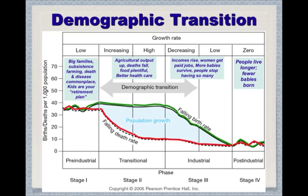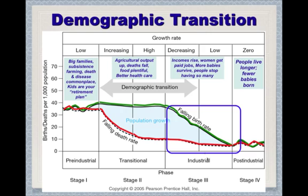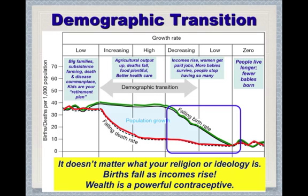This blue rectangle shows where we are worldwide now. Even some of the poorest countries are moving to this phase where the death rate has already fallen and now the birth rates are falling too, and in some countries the birth rate is actually above the death rate.